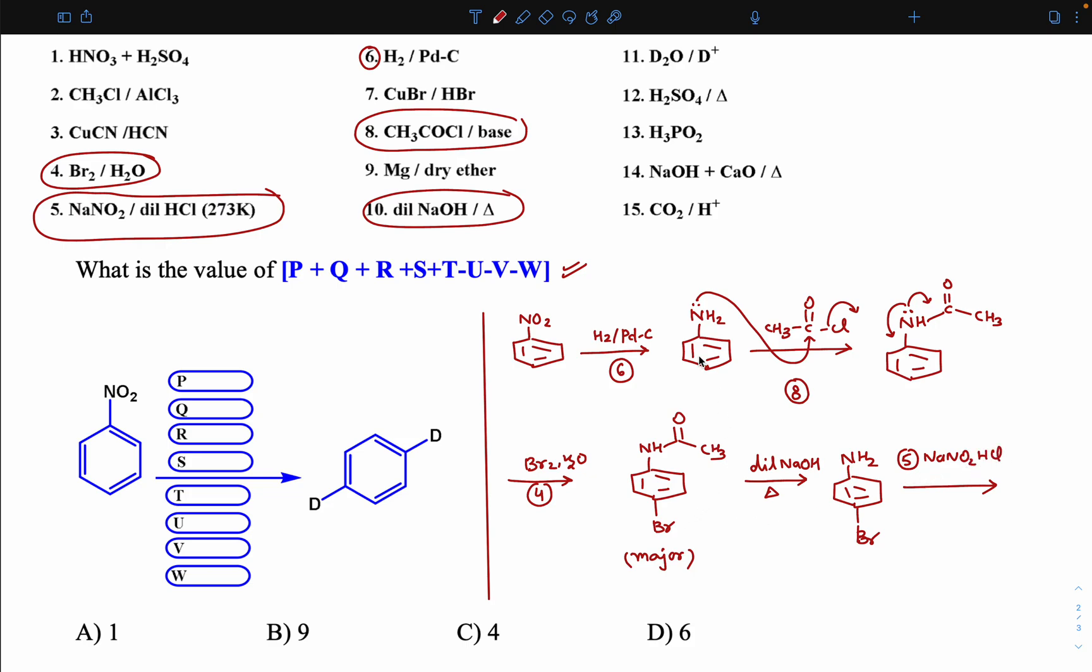Then simply do CuBr/HBr, 7th number CuBr/HBr, you will get 1,4-dibromobenzene. After this, simply use magnesium dry ether. Now I think everyone is getting idea now. Magnesium dry ether Grignard reagent, and then provide this 11th number, then provide this 11th number D2O. Then that Grignard reagent convert into di-deuterobenzene.